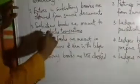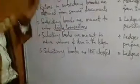Number three: subsidiary books are meant to enter daily transactions. Transactions are entered daily as they occur in subsidiary books, while for ledger, items or transactions are posted usually periodically.